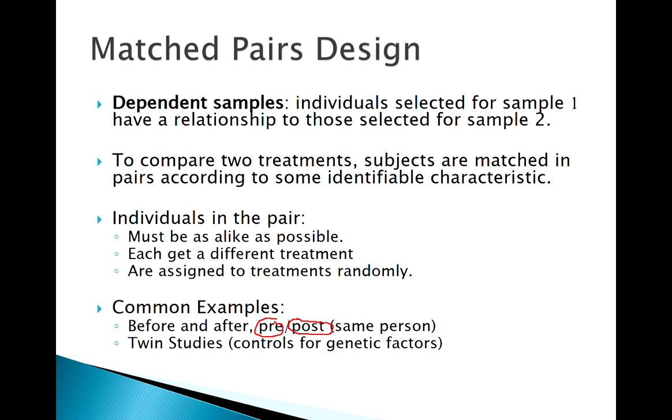Before and after, similar idea. Sometimes matched pairs examples we're just finding two very similar people and matching them up, but that can be hard to do because people are so different. One way to control for genetic factors, maybe you've seen a twin study.